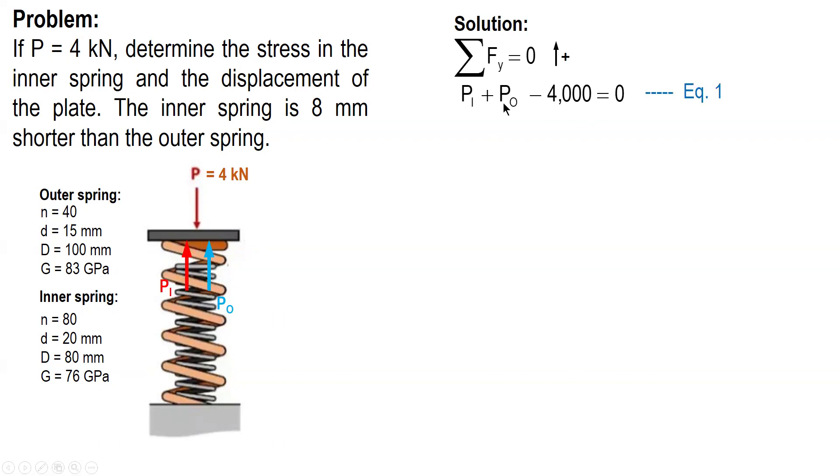So, this will be our equation 1. Since we have two unknowns, we need another equation to solve for P I and P O. So, this is the additional equation.